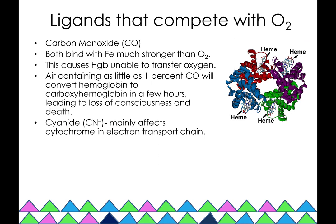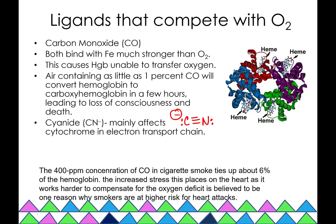The cyano ligand is isoelectronic with carbon monoxide and also participates in pi backbonding, but cyanide poisoning actually interferes with cytochrome in the electron transport chain rather than hemoglobin. One other thing to mention is smoking. Cigarette smoke contains about 400 ppm of carbon monoxide, which ties up about 6% of your hemoglobin, causing increased stress on the heart because it has to work harder to compensate for the oxygen deficit.